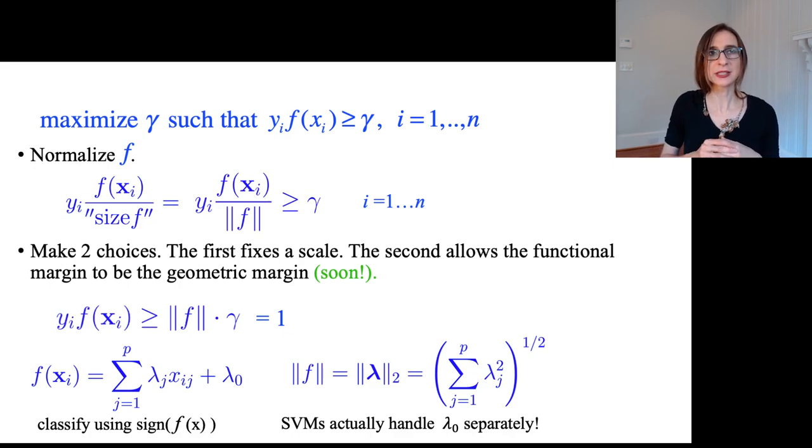What I'm saying is that for a linear model, I'm measuring the size of it by something kind of related to its slope, right? In one dimension, that lambda would be the slope. And then I'm not including the intercept term.